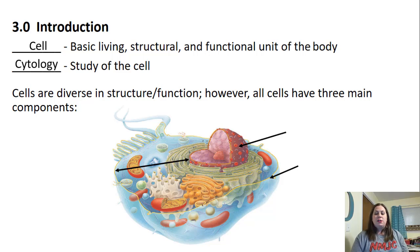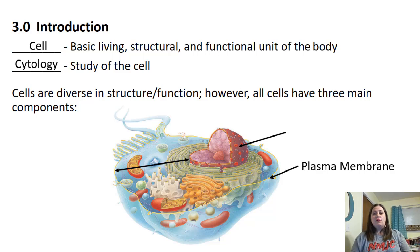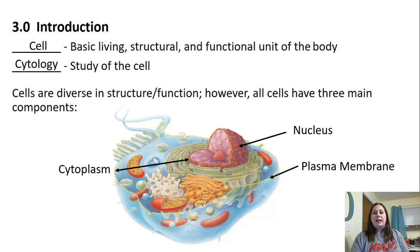Cells are diverse in their structure and function, however all cells have three main components in common. One is the plasma membrane, the outer region that separates the inside from the outside of the cell. They also have a nucleus, where you find the cell's DNA. The space between the nucleus and the plasma membrane is the cytoplasm, a fluid area containing organelles.